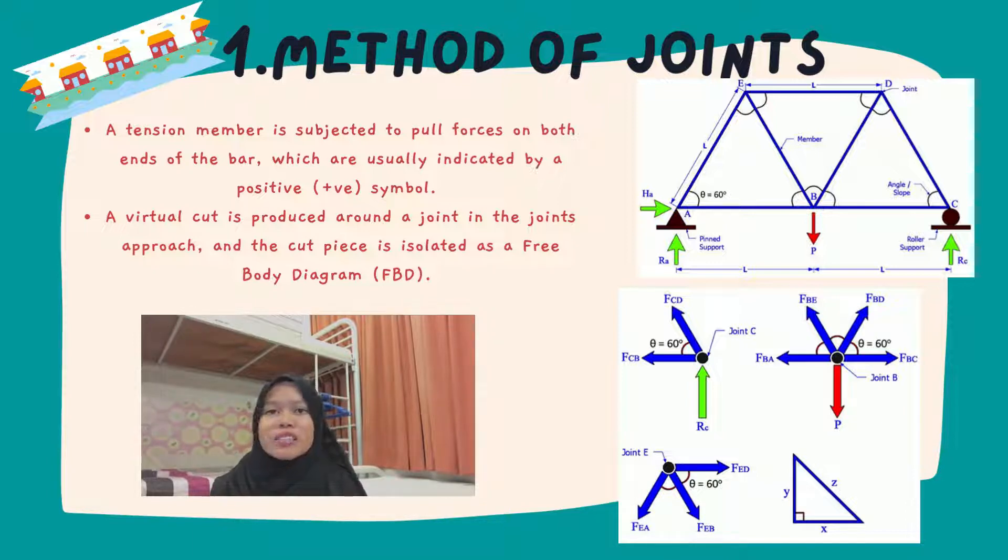At the simplest, a simplified truss model is supported by pin and roller support. The triangles have the same length and are equilateral with every angle of 60 degrees. By picking a point of moment at either point A or point C, the support reactions RA and RC may be computed, whereas HA equals zero.